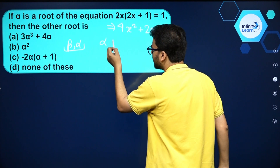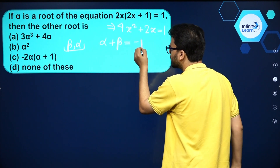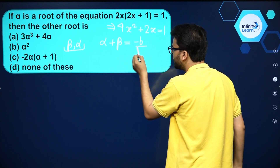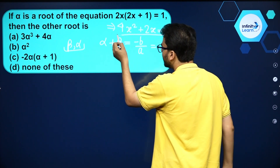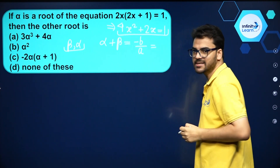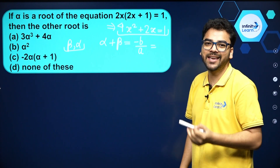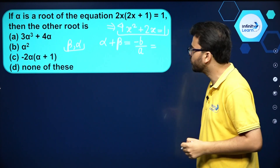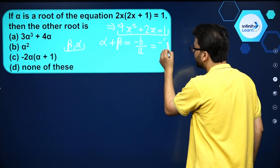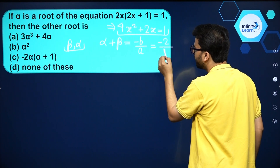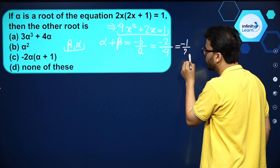Now we can find the sum of the roots. The sum of the roots of a quadratic equation is minus b by a. Comparing with the standard form ax² + bx + c = 0, minus b by a comes out to be minus 2 by 4, which is equal to minus 1 by 2.